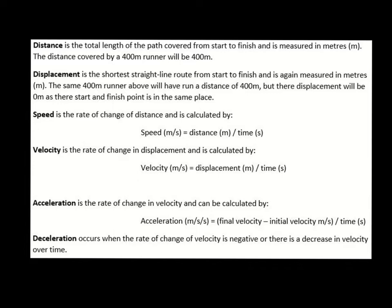Deceleration uses the exact same equation as acceleration. If you use the acceleration equation and get a negative number, this shows the athlete is clearly decelerating — they are slowing down. If you get a positive number, the athlete is accelerating, getting quicker. There isn't a different equation for deceleration; it's the same equation — it just depends whether the result is positive or negative.